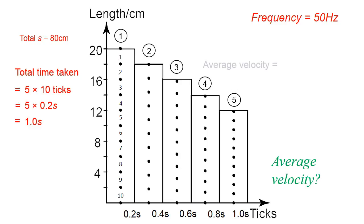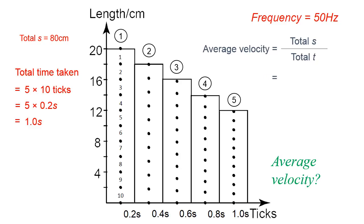Now we calculate the average velocity. The formula for average velocity is the total displacement S over the total time taken T. The total displacement is 80 cm, divided by the total time taken of 1 second, so you get the average velocity of 80 cm per second.